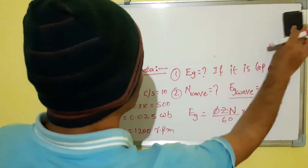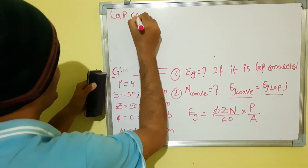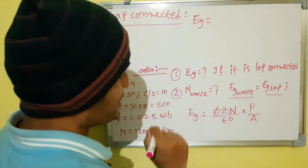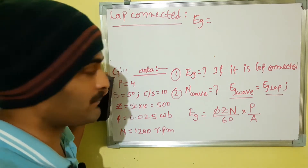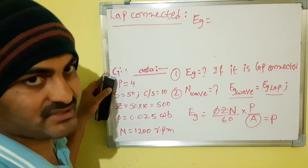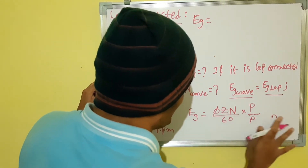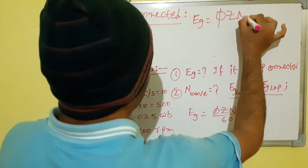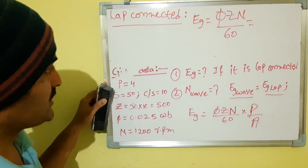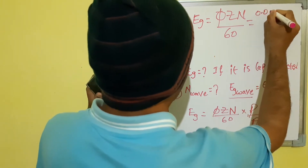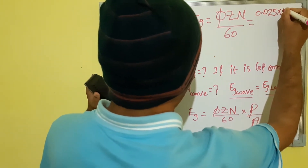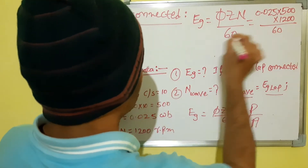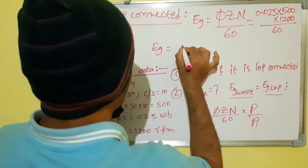The machine is lap connected. For a lap connected winding, the number of armature parallel paths A is equal to the number of poles P. So P by A equals 1. Substituting: generated EMF equals φZN/60, which is 0.025 into 500 into 1200 divided by 60. The generated EMF equals 250 V.